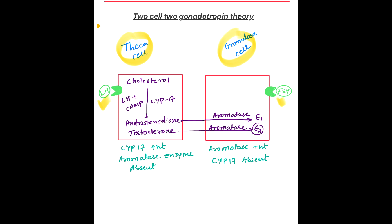Luteinizing hormone acts on theca cells, and follicle-stimulating hormone acts on granulosa cells. LH activates theca cells and converts cholesterol into androstenedione and testosterone with the help of the CYP17 enzyme.